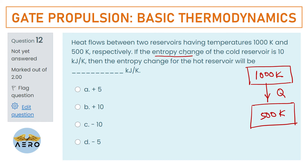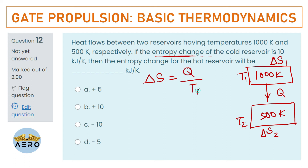The entropy change in the cold reservoir ΔS₂ = 10 kJ/K. Let T₁ = 1000 K (hot) and T₂ = 500 K (cold). Using the formula ΔS = Q/T: ΔS₂ = Q/T₂ gives Q = 10 × 500 = 5000 kJ.